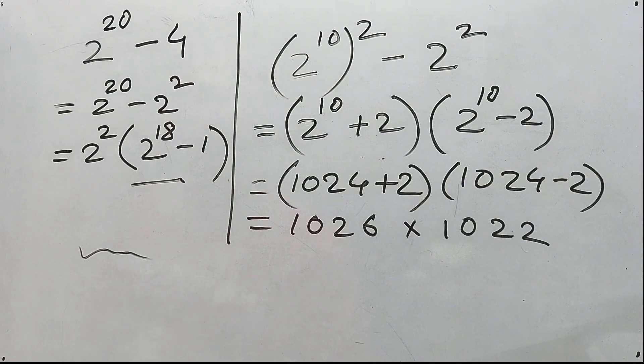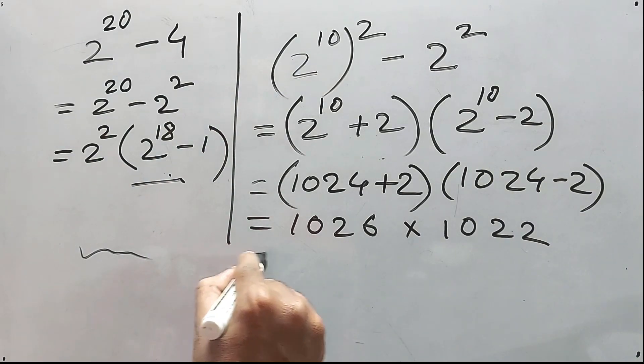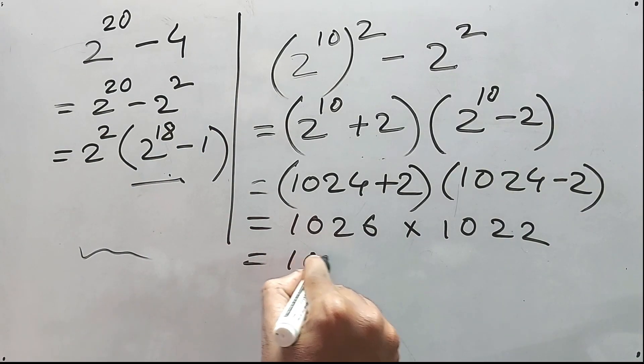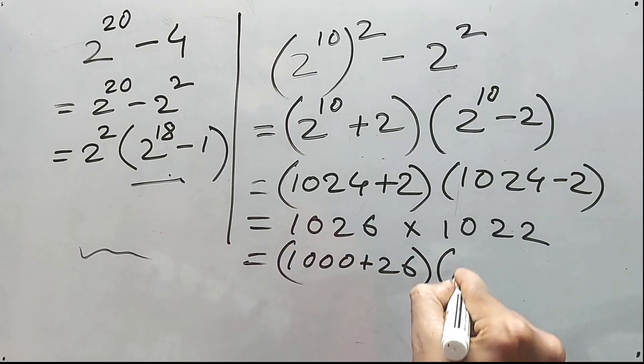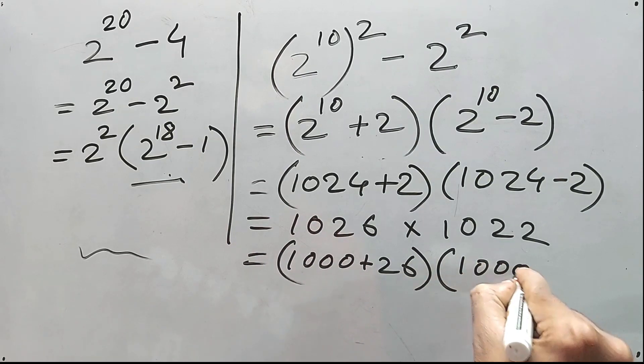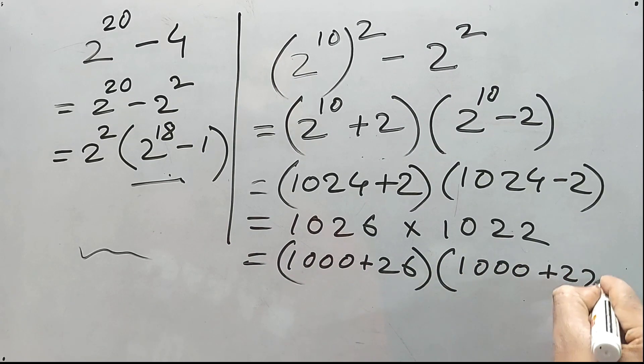Now, now my friend again will follow the previous rule. We have solved it in this one. That is 1000 plus 26 into 1000 plus 22. Right? Simple? Yeah. Definitely. It will be. Let's solve it here.